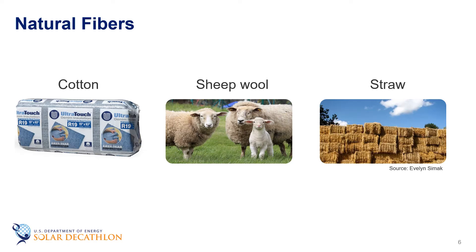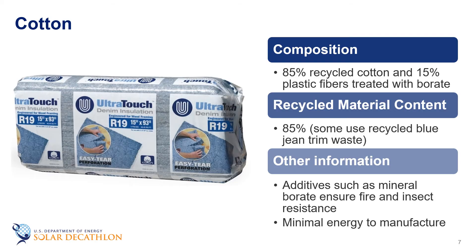Some natural fibers, including cotton, sheep's wool, straw, and hemp, are also used as insulation materials. Cotton insulation consists of 85 percent recycled cotton and 15 percent plastic fibers that have been treated with borate, the same fire retardant and insect and rodent repellent used in cellulose insulation. One product uses recycled blue jean manufacturing trim waste, and as a result of its recycled content, this product uses minimal energy to manufacture.